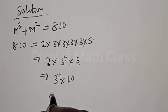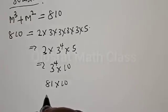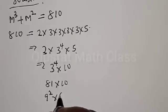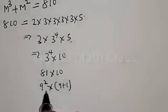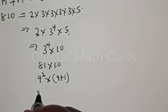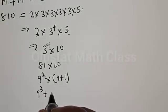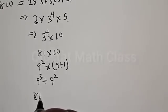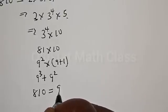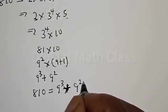3 raised to power 4 is 81, multiplied by 10. And 81 is the same thing as 9 squared, multiplied by 10, which can be written as 9 squared multiplied by (9 + 1). Opening the bracket: 9 squared multiplied by 9 is 9³, plus 9 squared multiplied by 1 is 9². So therefore, 810 can be expressed as 9³ + 9².